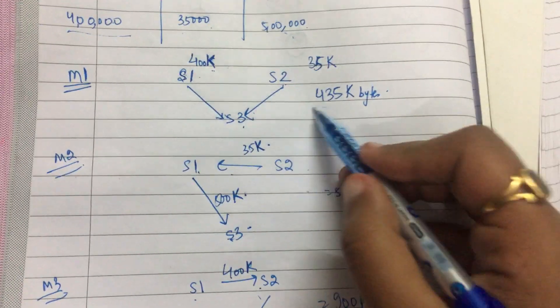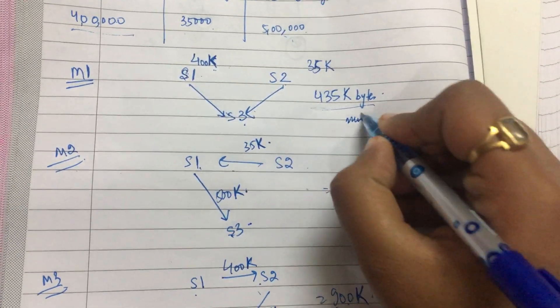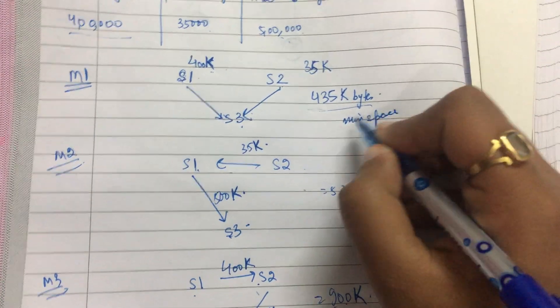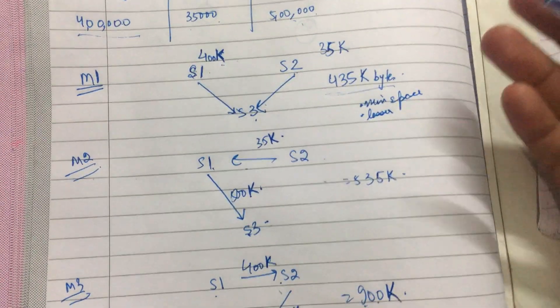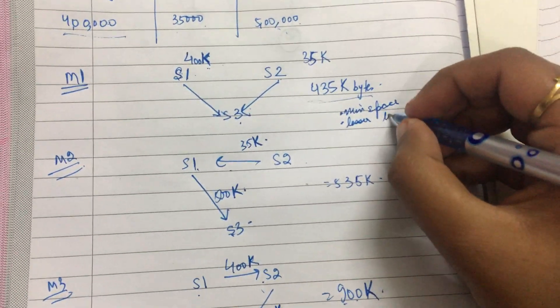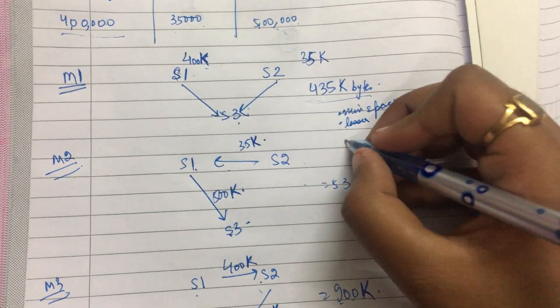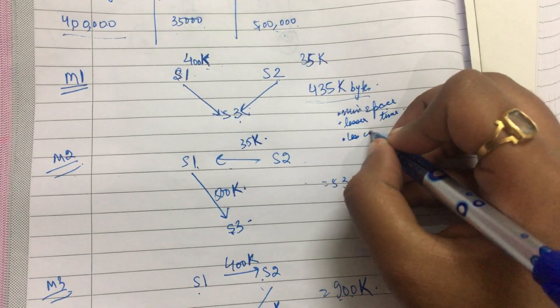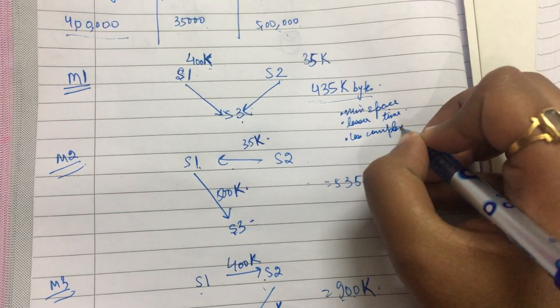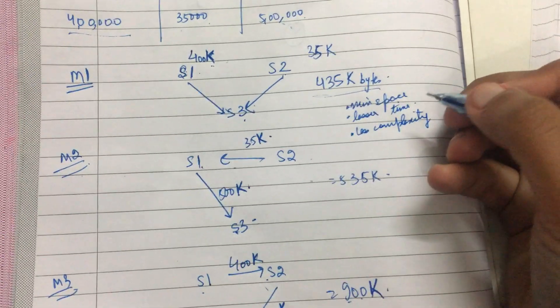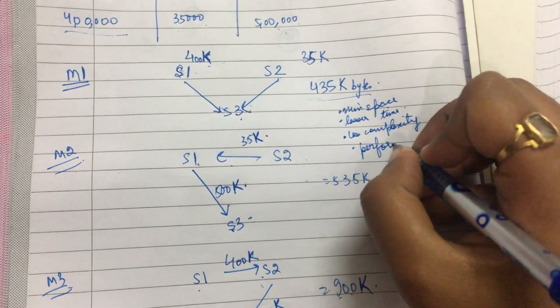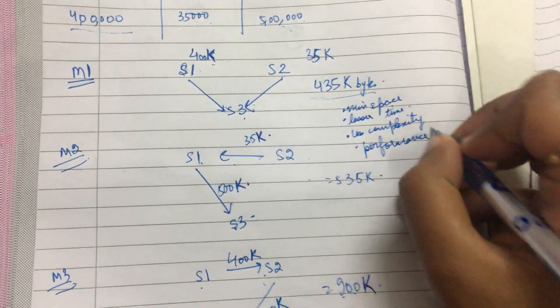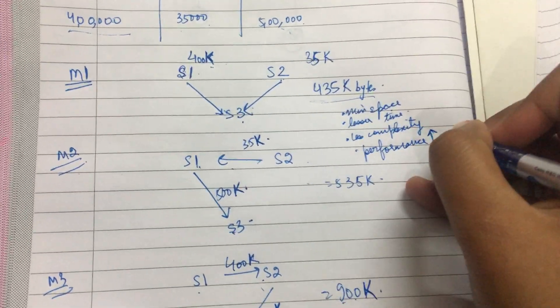Why? Because it is using minimum space and lesser time. To send more bytes or receive more bytes, more time is required. So lesser time, minimum space, lesser complexity. And obviously when the complexity is less, what will increase? Performance. My motive is always to increase the performance, so I will say that method one is best.